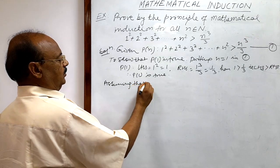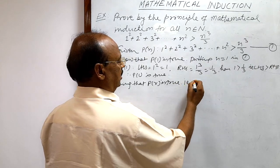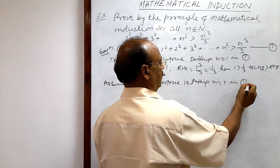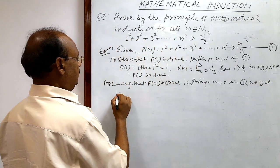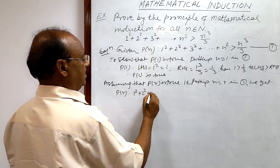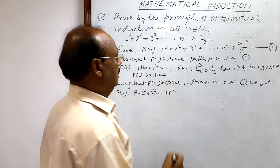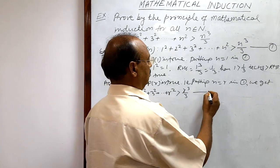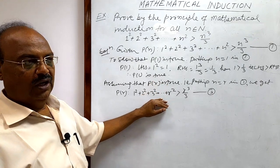Second step: assuming that P(r) is true. Putting n=r in relation number 1, we get P(r): 1² + 2² + 3² + ... + r² > r³/3. Let us call this relation number 2. We are assuming that this statement is true.